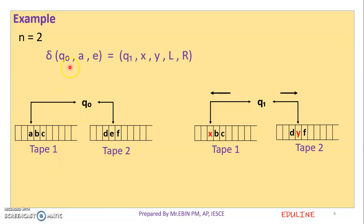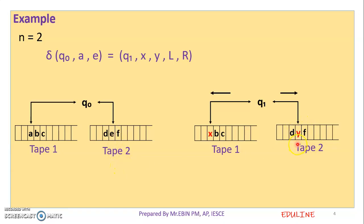In the first case, Q0 transitions to state Q1. When in state Q1, the string A is replaced by X and the head moves left. Then A is replaced, X is written, and it moves left. When there is a transition, A is replaced by Y and the head moves right. So I read here, write Y here, then write in the right place. This is the transition function.